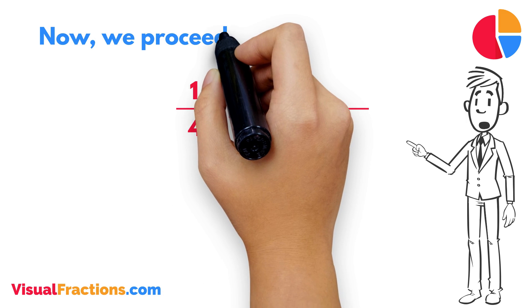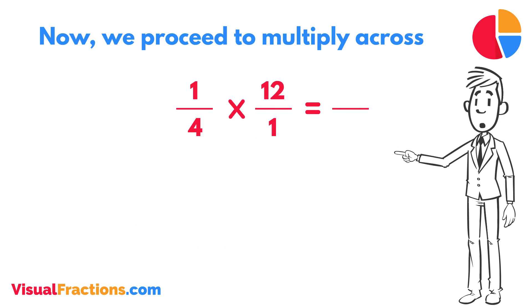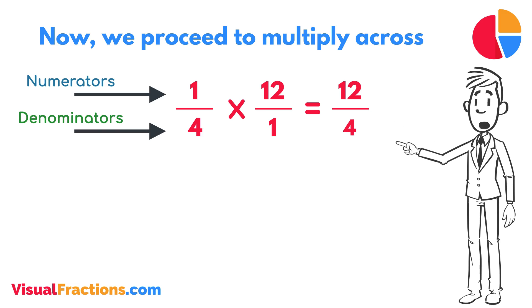Now, we proceed to multiply across. First, multiply the numerators, 1 times 12 equals 12. Next, multiply the denominators, 4 times 1 equals 4.